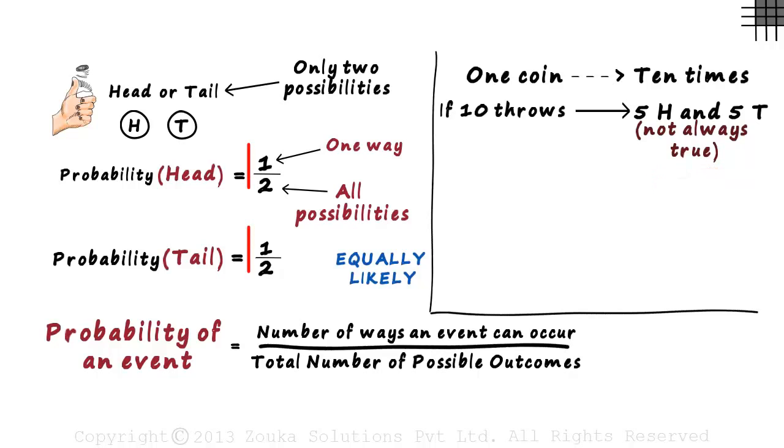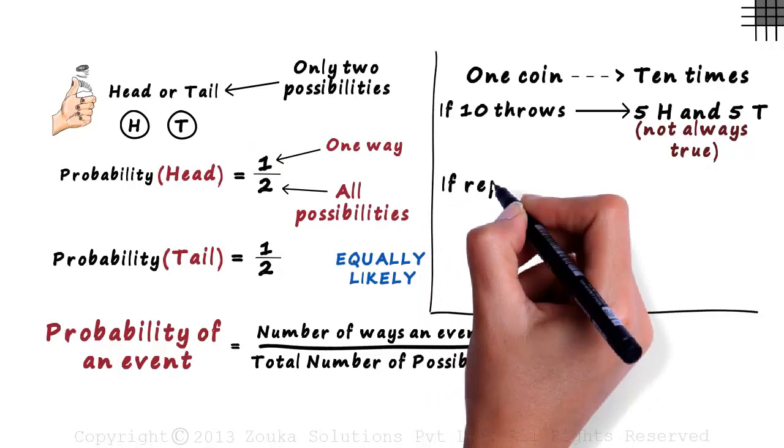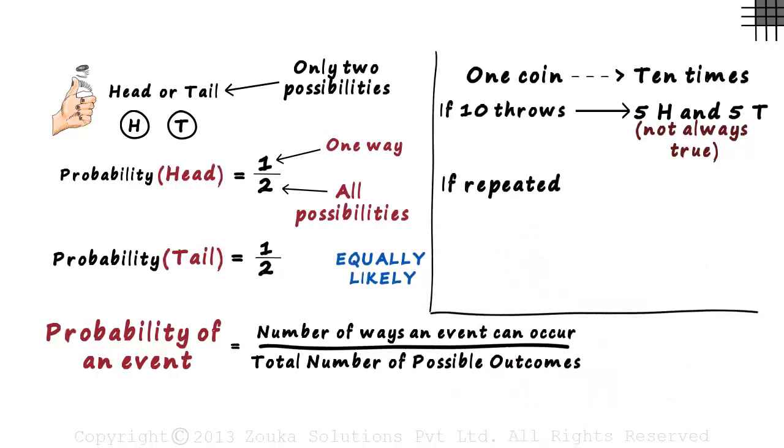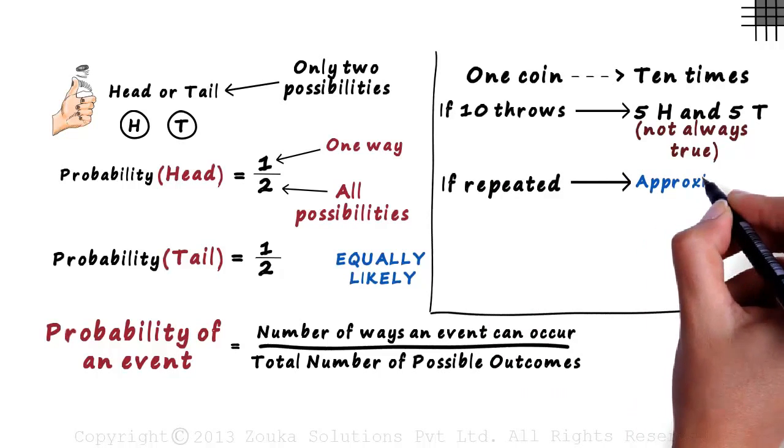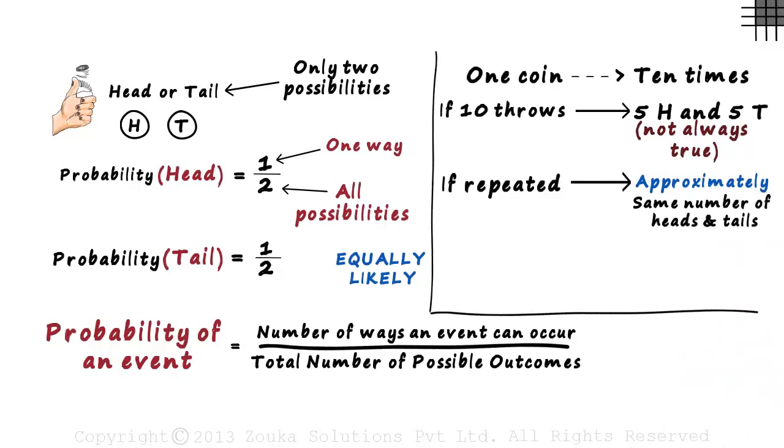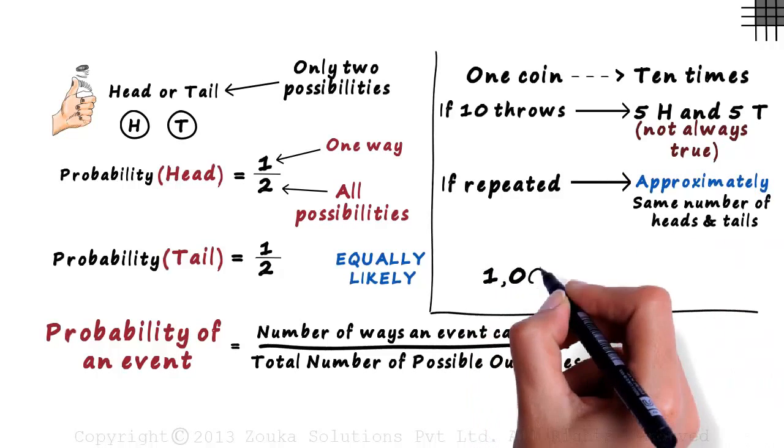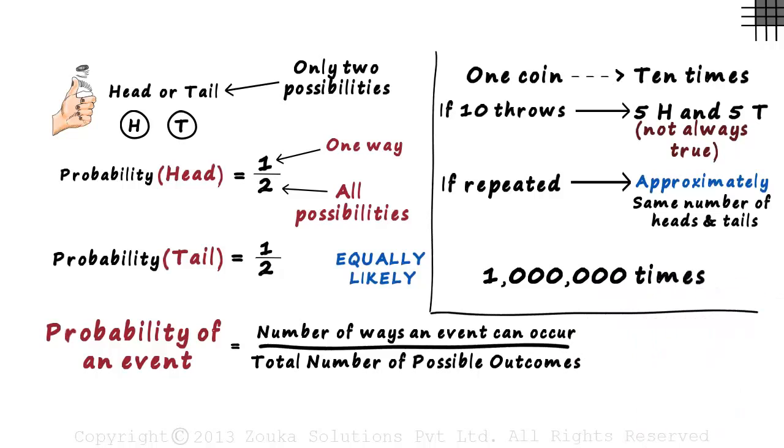So what does this half essentially tell us? It tells us that if the process of tossing a coin is repeated many many many times, then we will get approximately the same number of heads and tails. So if you toss a fair coin a million times, you will see that you would get almost the same number of heads and tails. Remember, the probability does not give you a perfect or a short answer. It just tells you the likelihood of an event occurring.